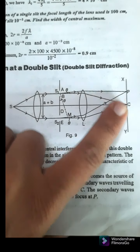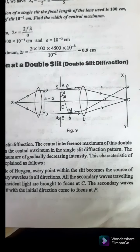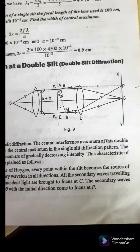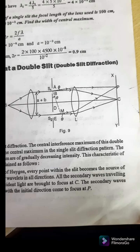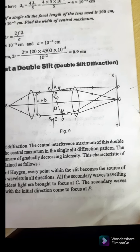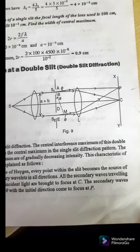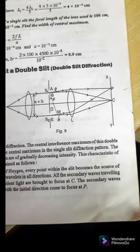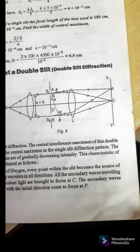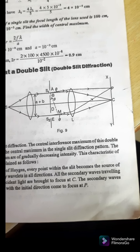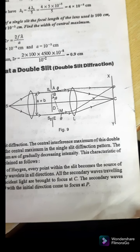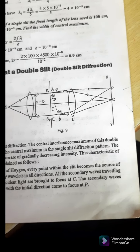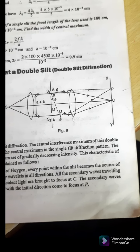On this screen XY we obtain the diffraction pattern. The diffraction pattern obtained on the screen is characterized by a number of equally spaced interference maxima and minima in the region normally occupied by the central maxima of the single slit pattern. The central interference maxima of the double slit pattern is four times more intense than the central maxima of the single slit pattern.